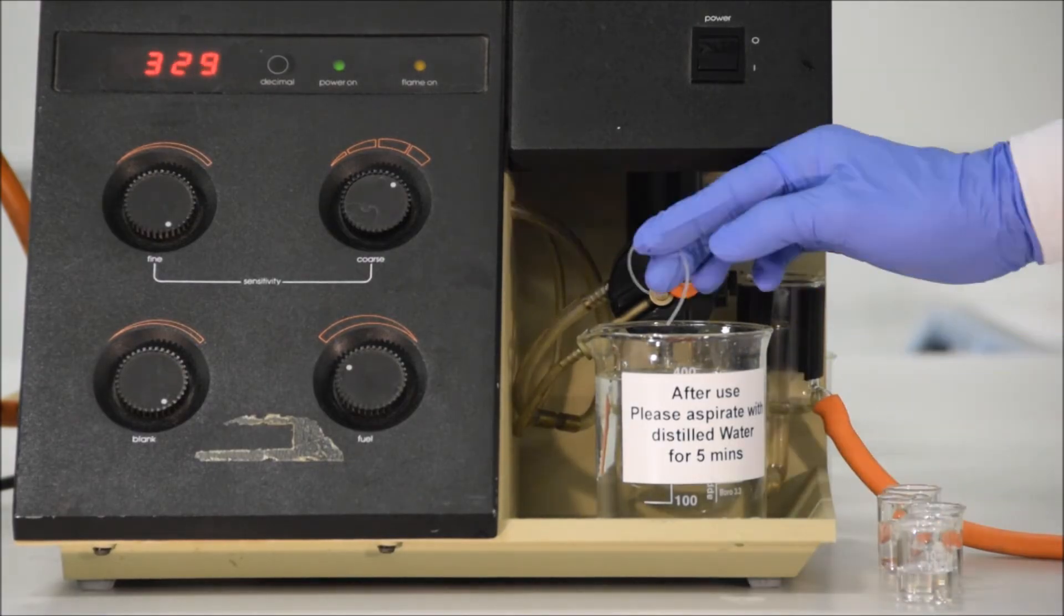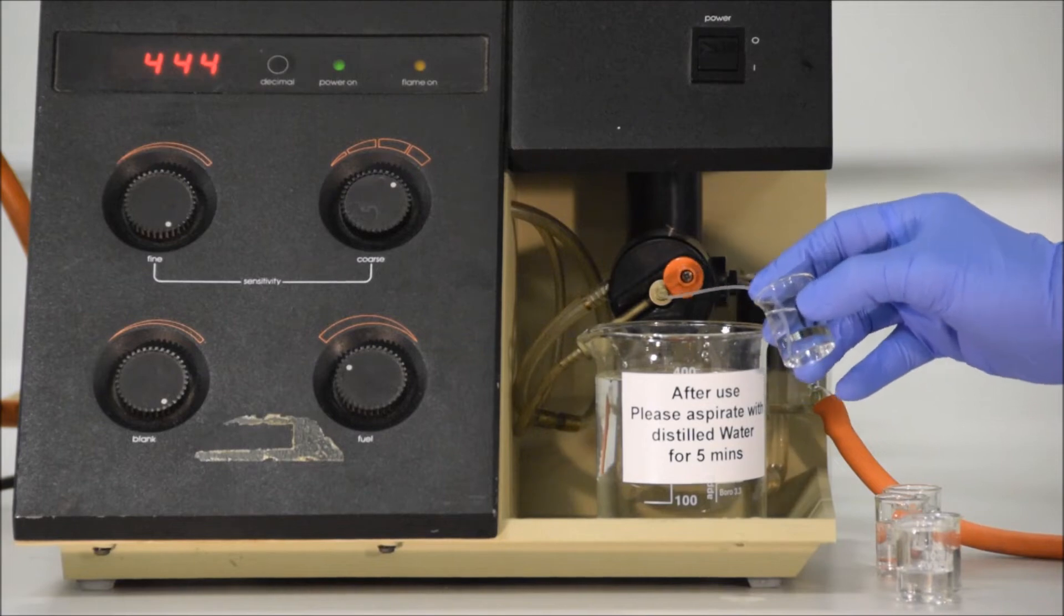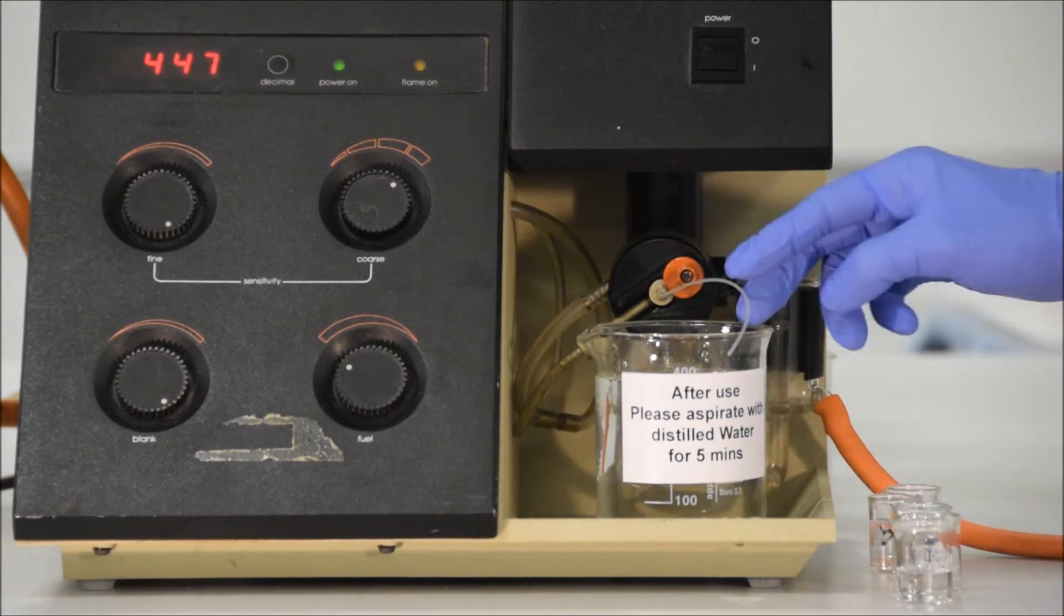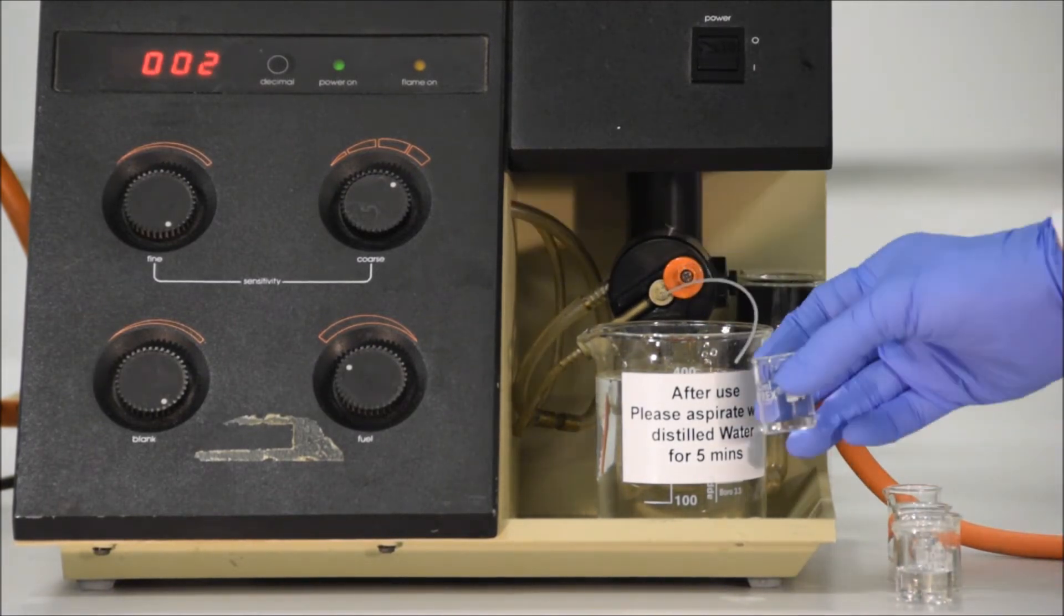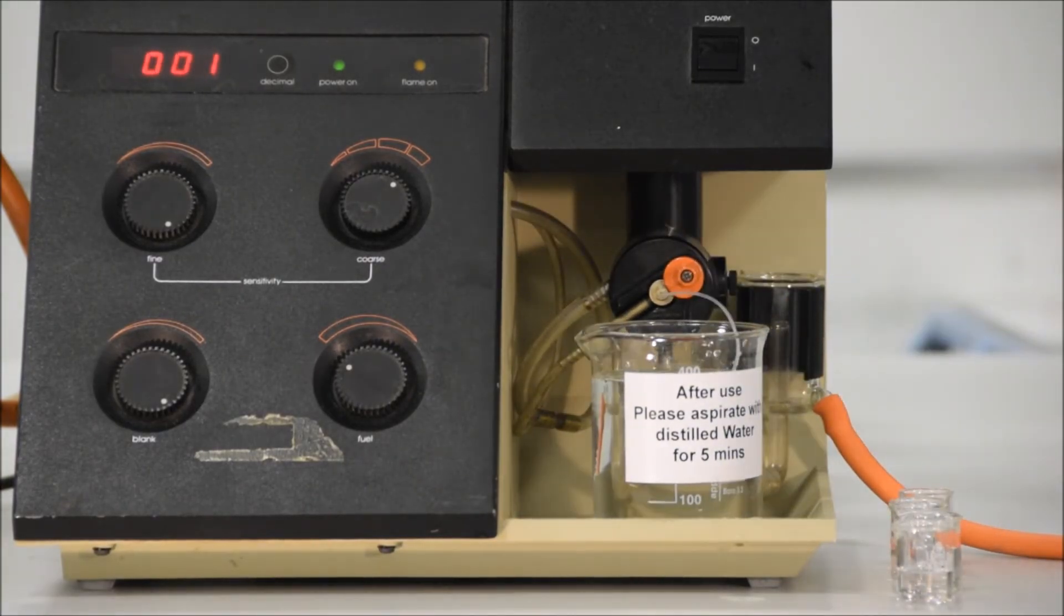Now let's make readings for all the other standards that we have. We put the inlet tube into the sample, wait 20 to 30 seconds until our reading is consistent, record that reading, and return it to the water. Aspirate for 20 to 30 seconds until it's gone back to zero, and repeat.